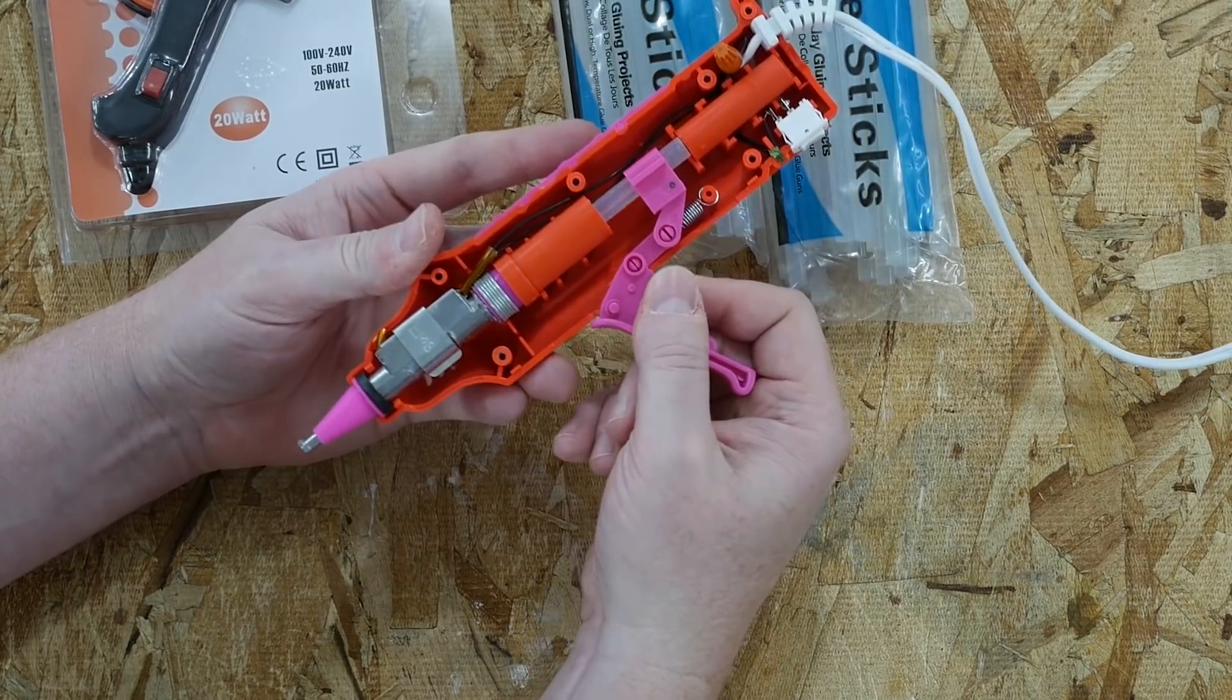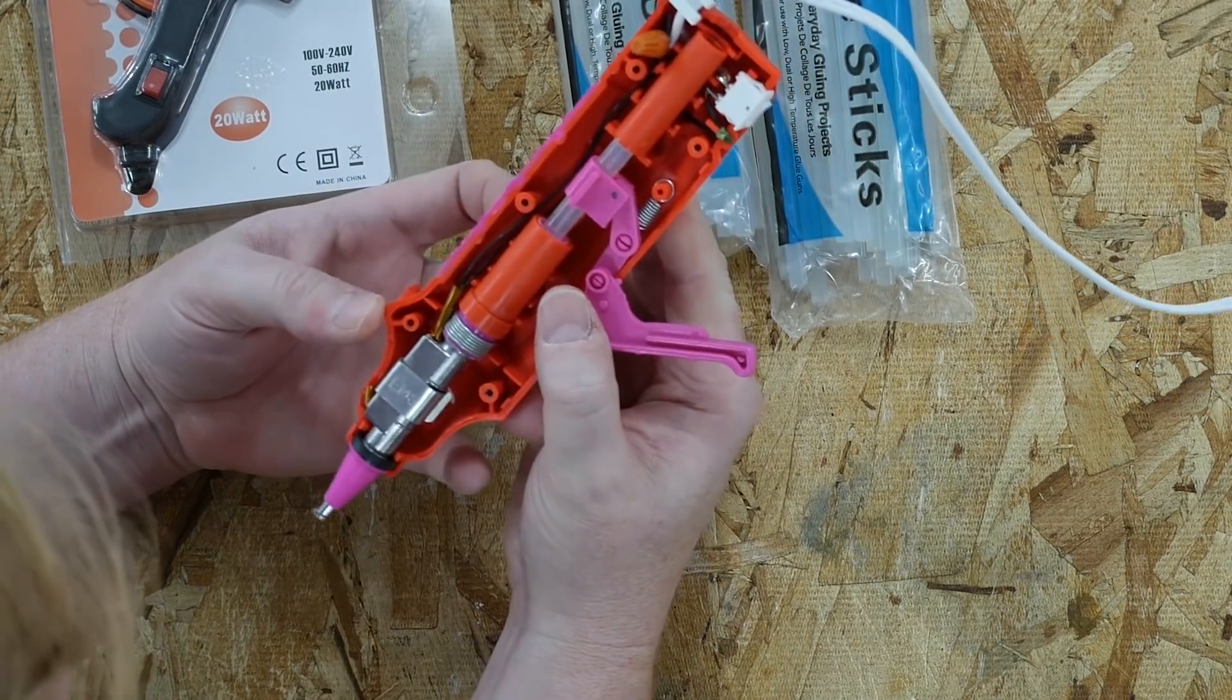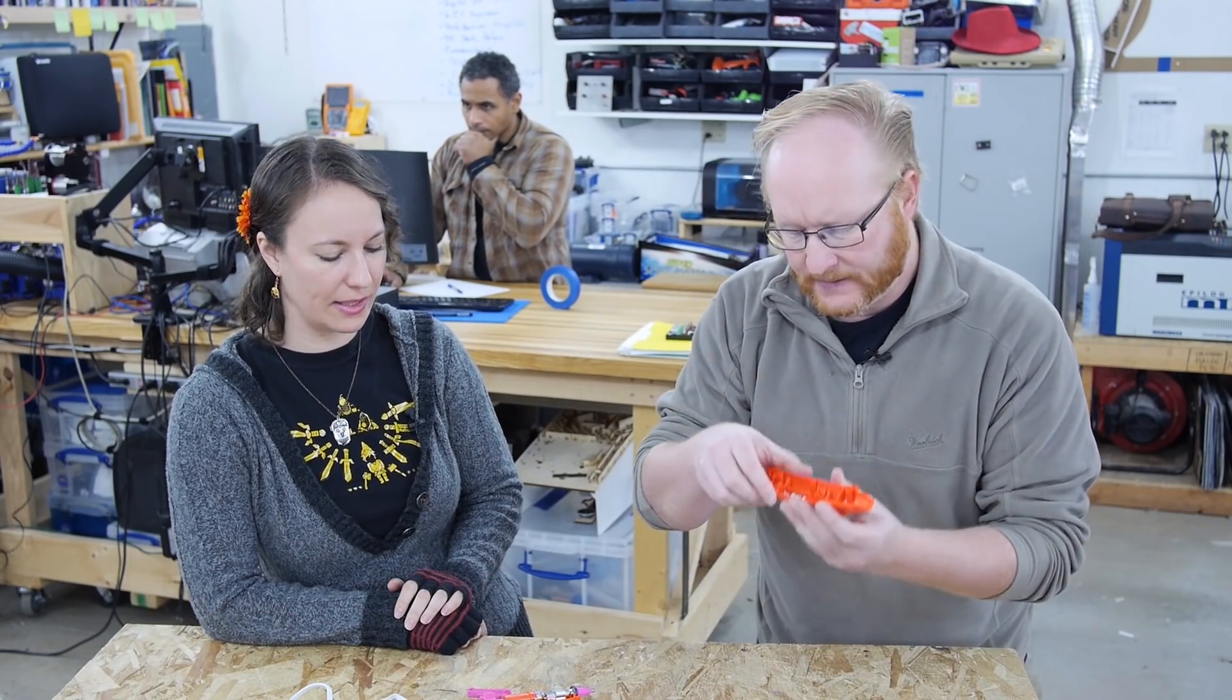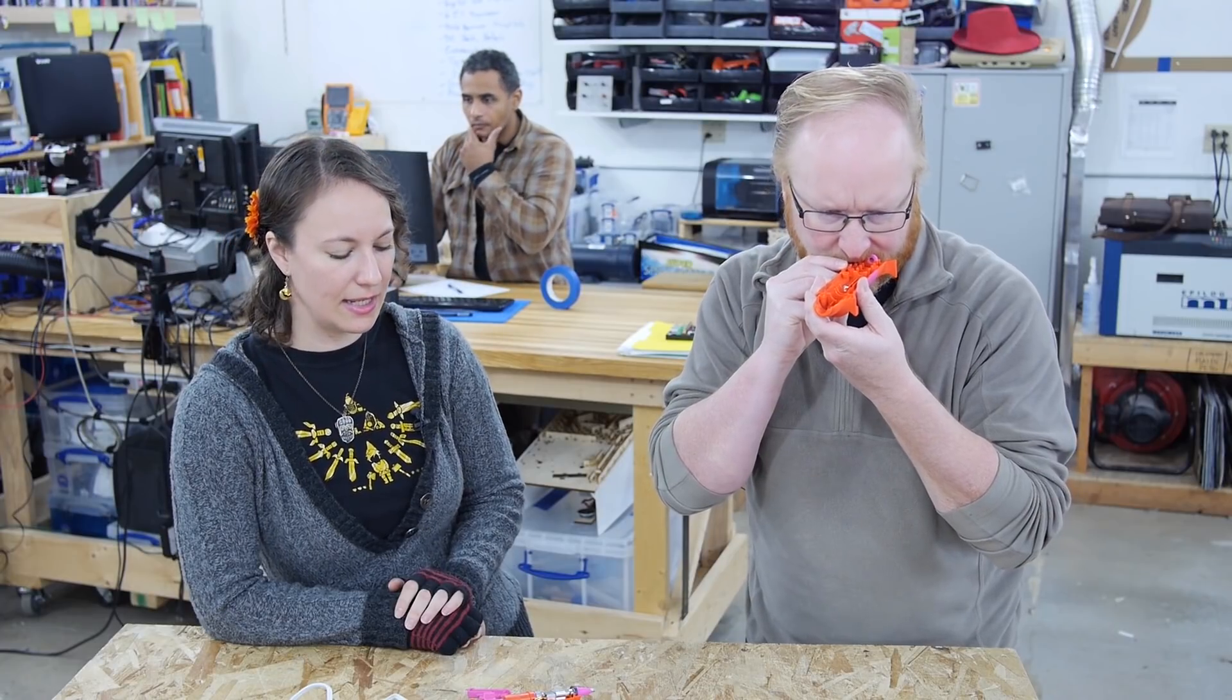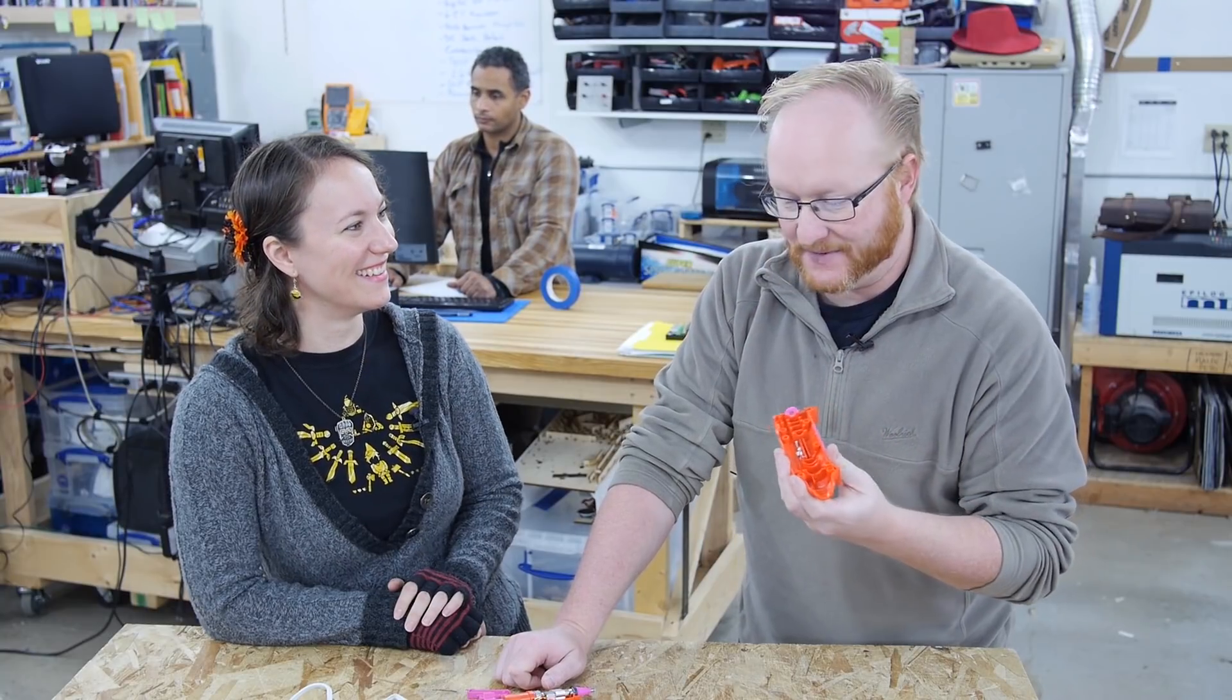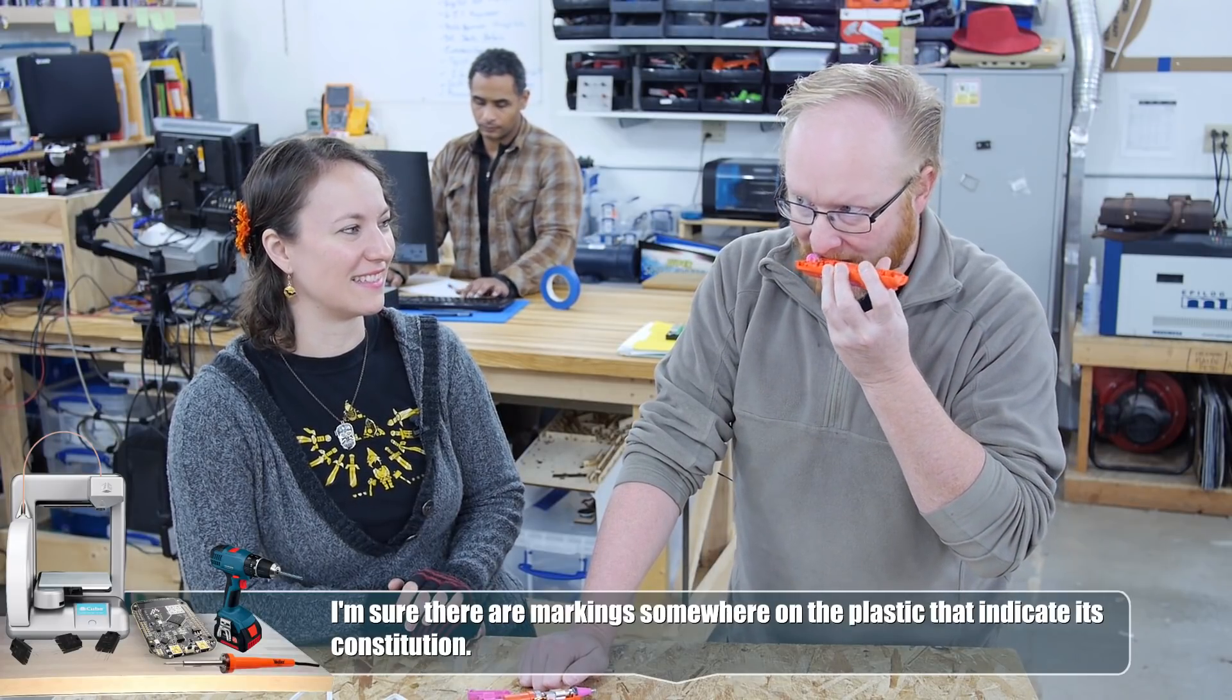So originally when we started this project, I bought a bunch of hot glue guns and then a couple other tools that also had hot melting elements in them. And one of them was this Mod Podge gun. But I don't think we ever took it apart to really examine it. I'm just analyzing what's in it. This isn't standard ABS. They're using something else for this, some sort of glass-filled plastic.